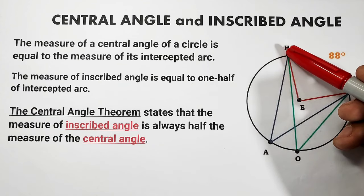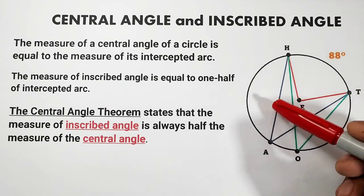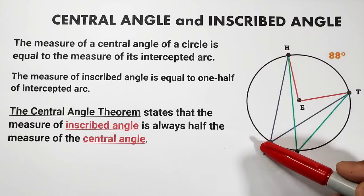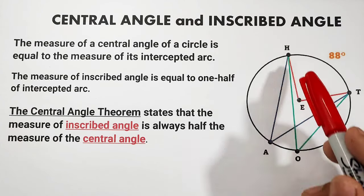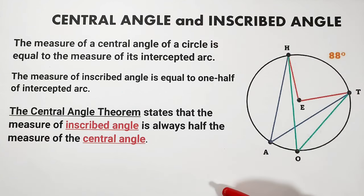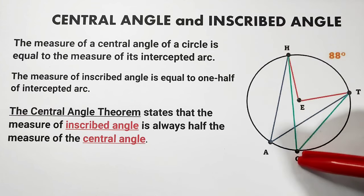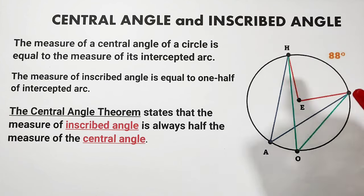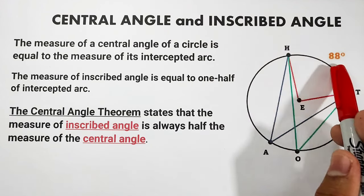Our inscribed angle here is angle HAT, and the intercepted arc is arc HT. We also have another inscribed angle, angle HOT, and they have the same intercepted arc, which is arc HT.